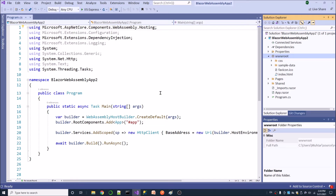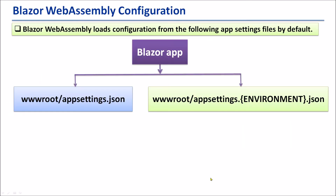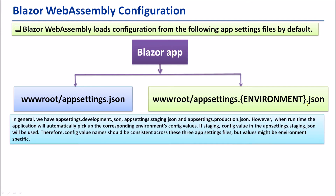Before adding the configuration file, I would like to give a brief introduction to Blazer WebAssembly configuration. Blazer WebAssembly loads configuration from the appsettings files by default. In a Blazer application, appsettings will reside inside the web root folder - that is, web root folder slash appsettings.json. Appsettings.json has three types: appsettings.development.json, appsettings.staging.json, and appsettings.production.json. At runtime, the application will automatically pick up the corresponding environment's config values.